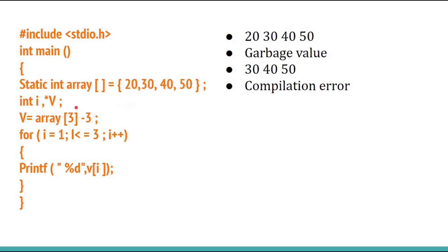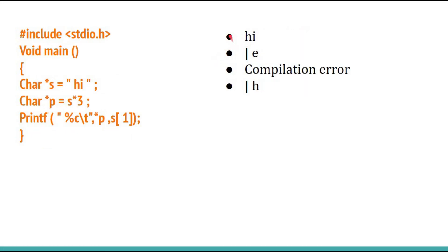In this pseudo-code question, since *v is given, v is storing an address. Since it is storing an address, array[3−3] will not have any previously defined value. This will print a garbage value. Option B, garbage value, is the right answer. Let the next question be the homework — comment below with its answer.